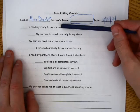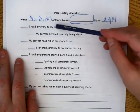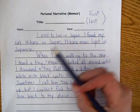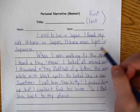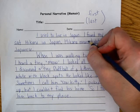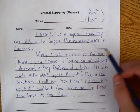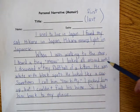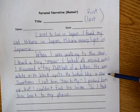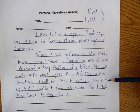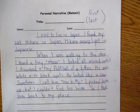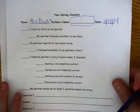Let's look at this checklist because you have to go through it in order. Okay, first: I read my story to my partner. So I would read my story: 'I used to live in Japan. I found my cat Hikaru in Japan. Hikaru means light in Japanese. When I was walking to the store, I heard a tiny meow. I looked all around until I discovered a tiny fluff ball of a kitten. He was white with black spots. He looked like a cow, so sometimes I call him cow kitty. I picked him up, but I couldn't find his home, so I took him back to my place.' In this story, if it's a personal narrative, we'll also have a lesson — but mine doesn't have the lesson yet.